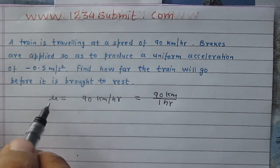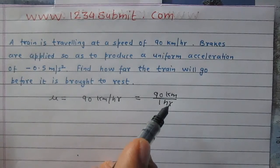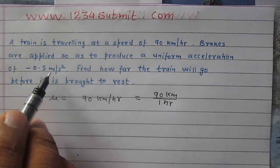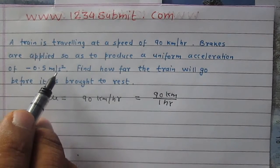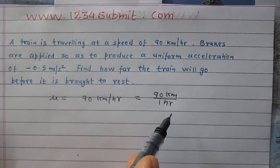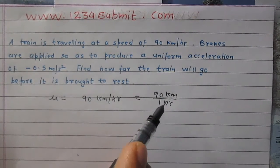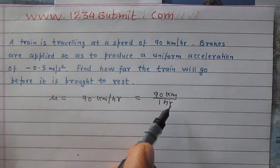Now velocity is given us in km per hour and acceleration is given as m per second square. These are two different sets of units. So I want to convert km per hour into m per second.